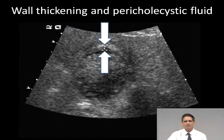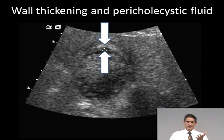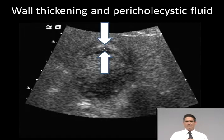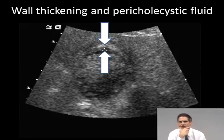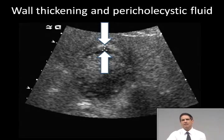Gallbladder wall thickening and pericholecystic fluid are both ultrasound imaging features suggesting inflammation, most likely from acute cholecystitis. The clinical features are key here: if these changes are accompanied by recurrent right upper quadrant pain and gallbladder tenderness or a sonographic Murphy sign, the diagnosis is usually pretty obvious. The issue is more complicated when the patient has congestive heart failure, because hepatic congestion from right-sided heart failure can cause right upper quadrant pain and ascites, leading to pericholecystic fluid. Heart failure can thus mimic gallstone disease or cholecystitis.